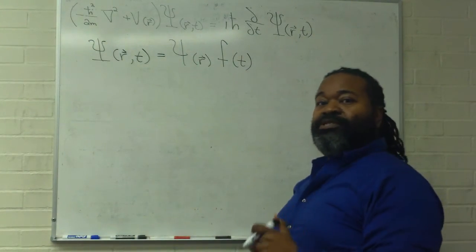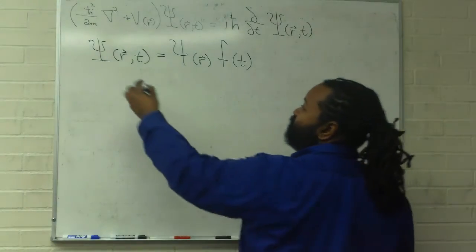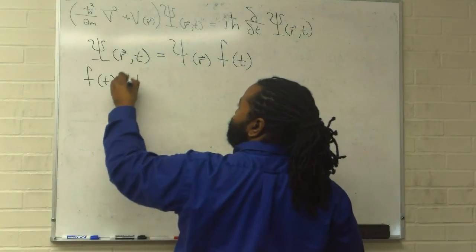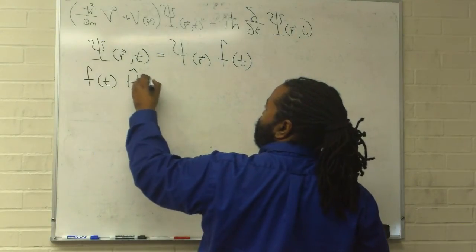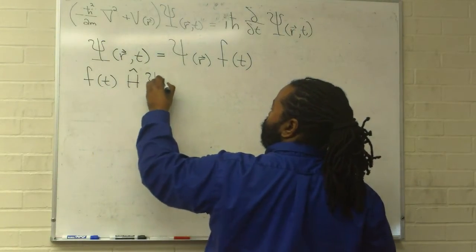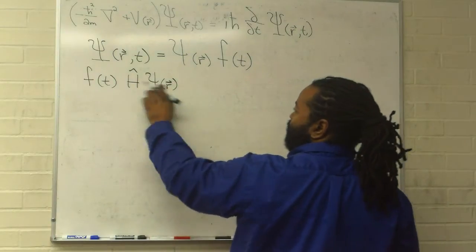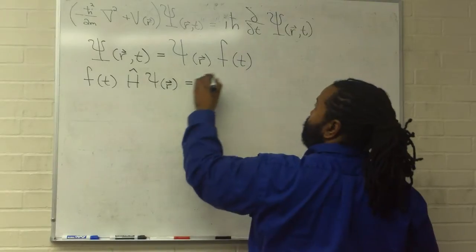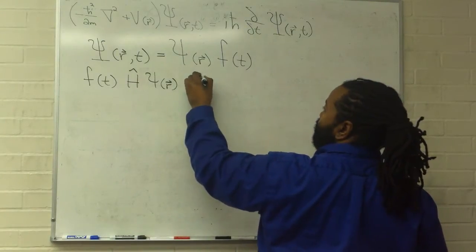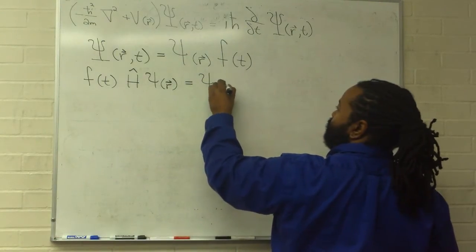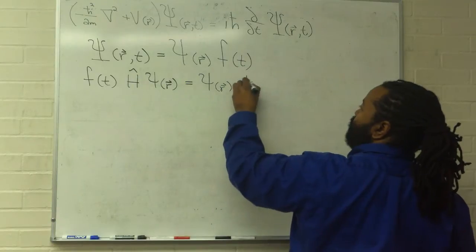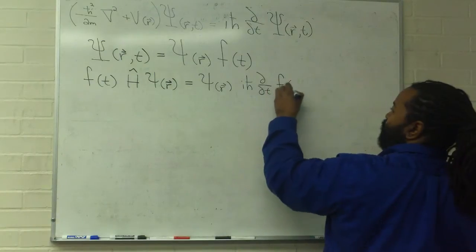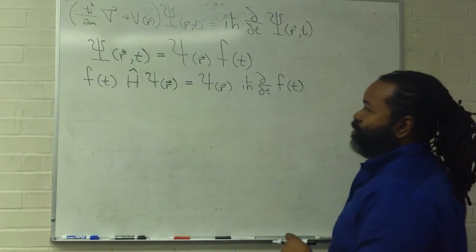The space portion will not be impacted by the time derivative. As a result, we have the time function multiplying the Hamiltonian, which will act on the space part. That is going to be equal to the space part multiplying the time derivative acting on the time part.